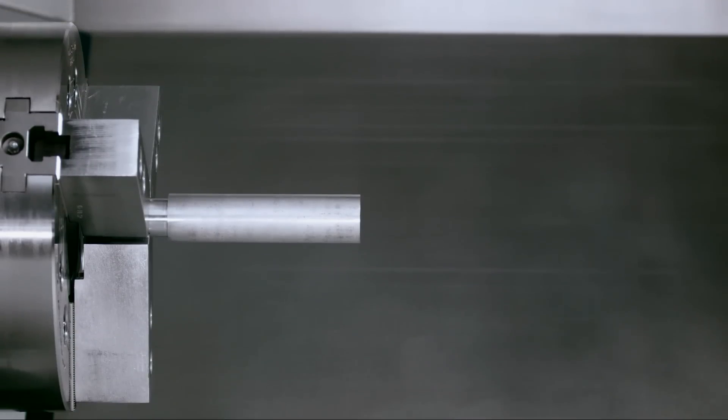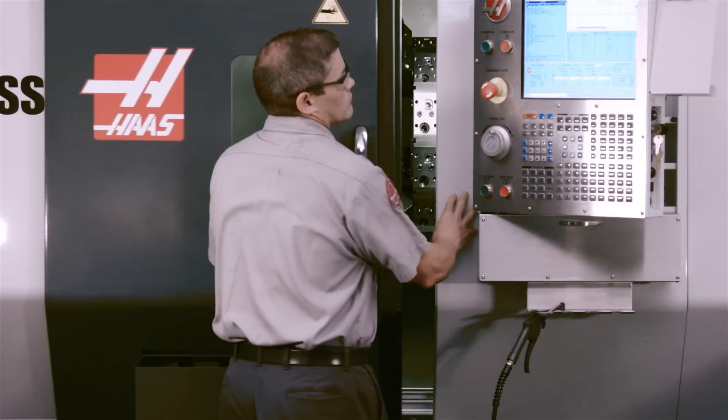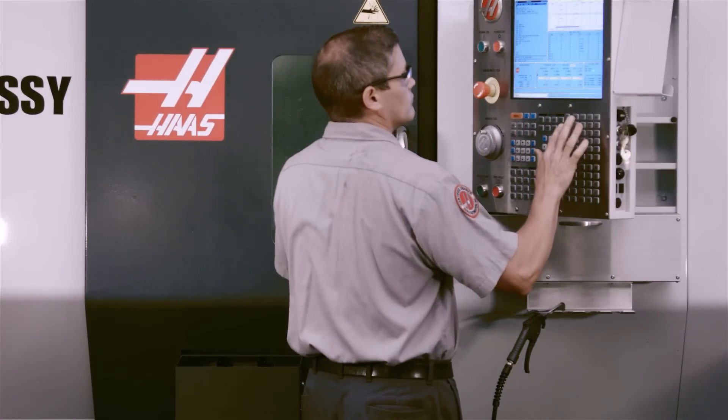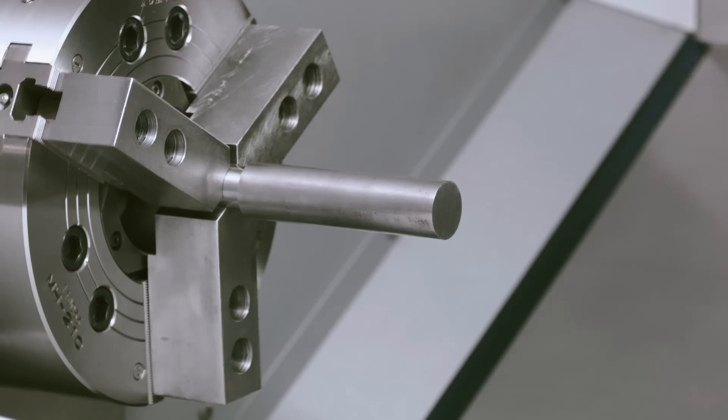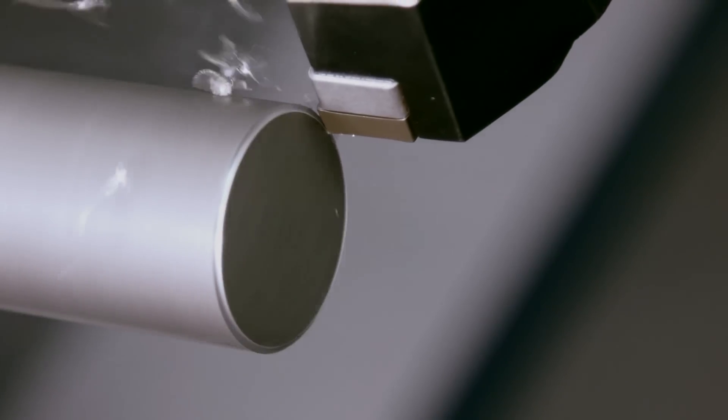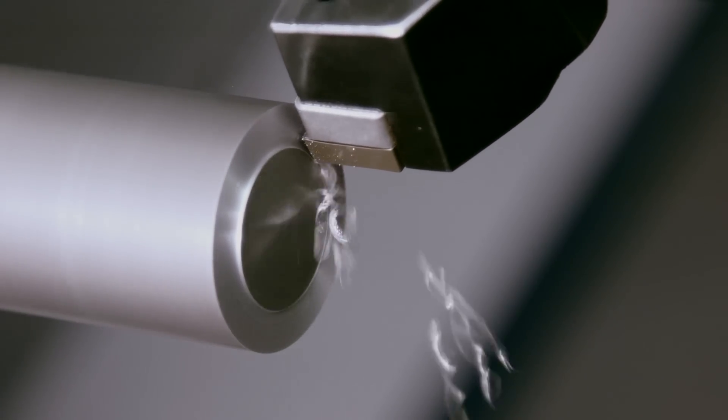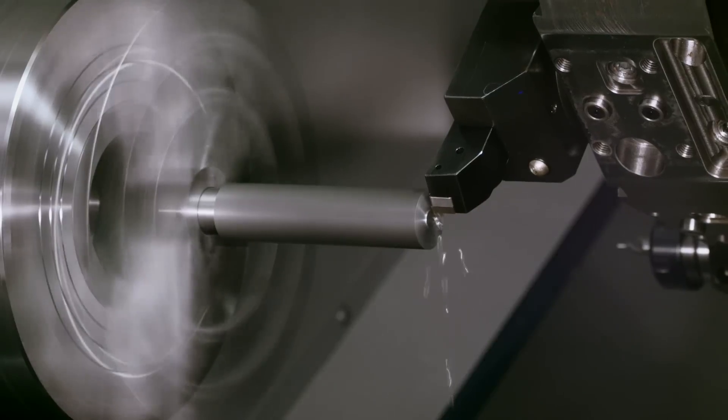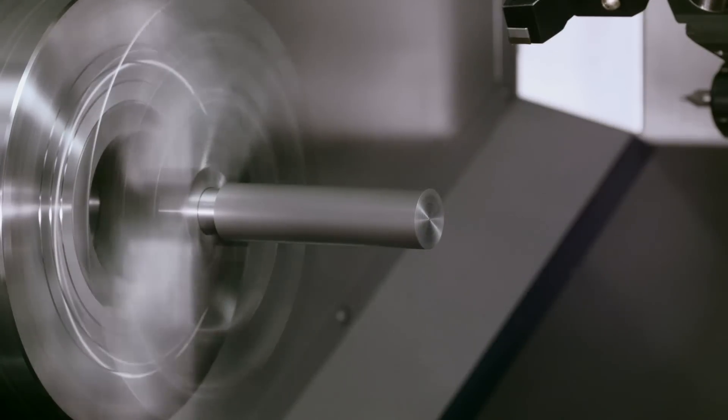You might be thinking, I've got this part sticking out pretty far. Isn't it going to deflect during the cut? Good question. Let's face and center drill our part and see if it does deflect. For safety, the facing and drilling should be run at slower spindle speeds, with a slow feed rate and a shallow depth of cut, so the shaft won't whip or bend.